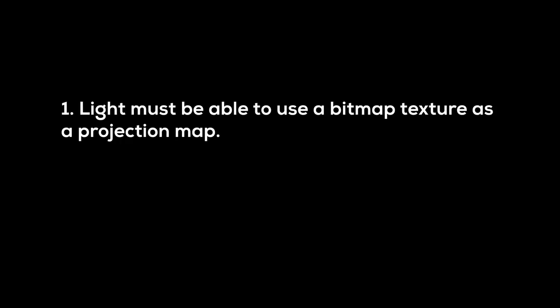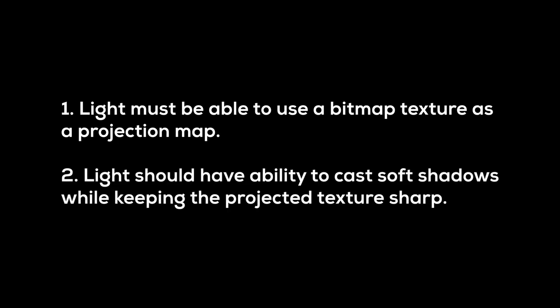Number one, your render engine needs to either have or support a type of light that has the ability to project a bitmap texture. Number two, your light source should have the ability to create soft shadows while keeping the projected texture sharp, because they've already been calculated to look like they're at a certain depth, and we want to be able to create shadows that match that depth level.